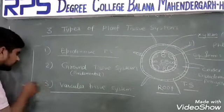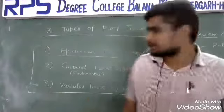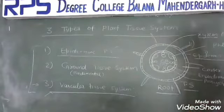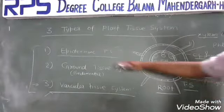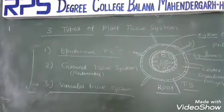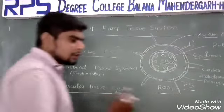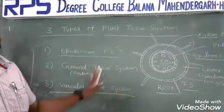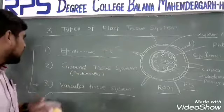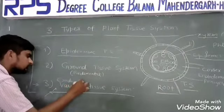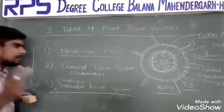The vascular tissue system has a particular function: conduction — whether it is water, minerals, or food. The function of the epidermal tissue system was protection. All functions of stomata, epidermis, and related structures are functions of the epidermal tissue system, with the main function being protection. The main function of the vascular tissue system is conduction.